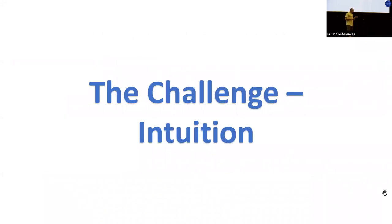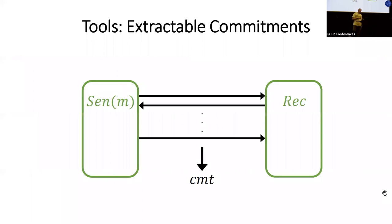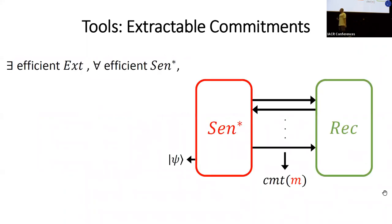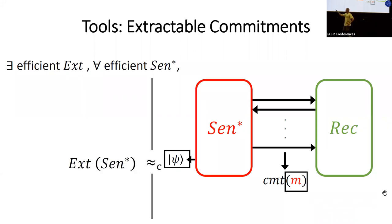Let's get some intuition for why non-malleability is less trivial when proving security against a quantum man-in-the-middle. To understand this difficulty, let's first define extractable commitments. This is a commitment scheme with one more important property: quantum extractability. There is a polynomial-time quantum extractor algorithm such that for every arbitrary, possibly malicious sender, the extractor simulates two things: the quantum view of the malicious sender when interacting with the receiver, and also the committed message — the message under the commitment.